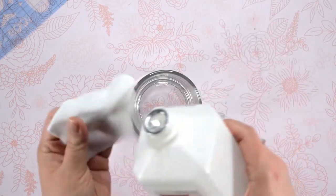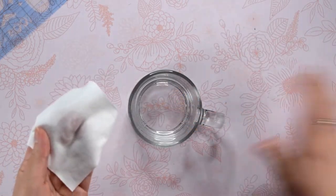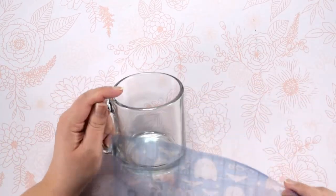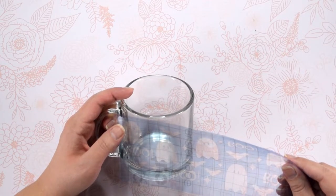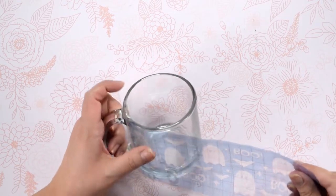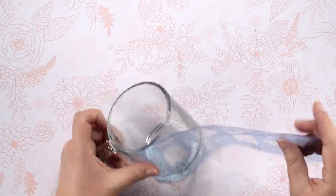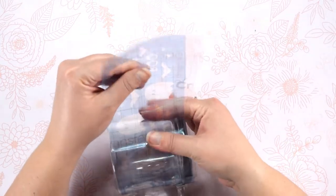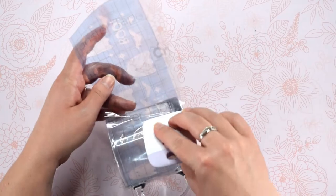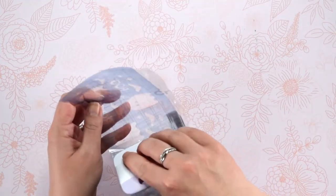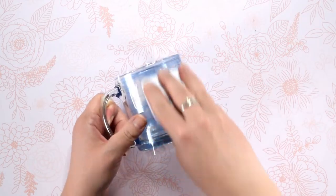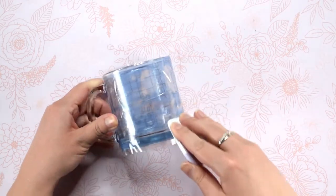Before we stick the stencil onto the glass, we will need to clean it with alcohol and a lint-free cloth. Once that is dry, we can place the stencil on the mug. Then we will use a scraper tool again to make sure the vinyl sticks to the cup.